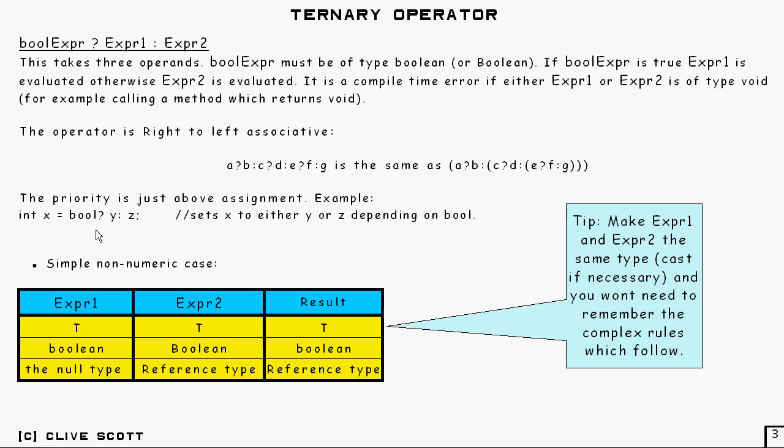And if you look at it, the type is going to depend on the type of expression 1 and the type of expression 2. And that's where all the problem lies, and that's where the difficulty lies, because these can be quite a variety of different sort of types. And this is where it can get complicated. So anyway, we'll deal with a simple case first. This is the simple non-numeric case.